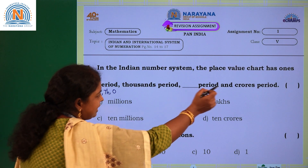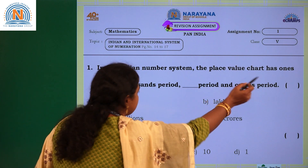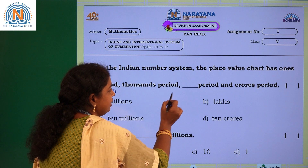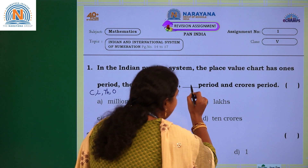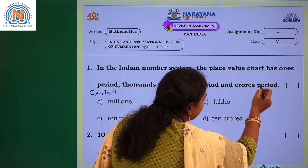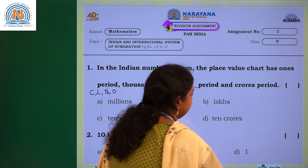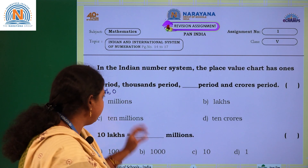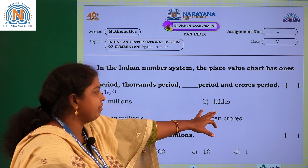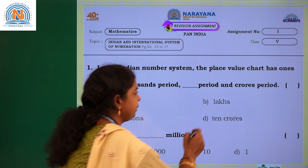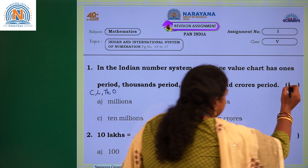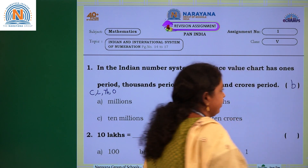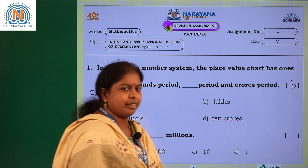So which period is missing here? Ones period is there, thousands period is there. Next, lakhs period should be there, and crores period. So which one is missing? Lakhs. In which option do you have lakhs? Option B. Let us choose option B.